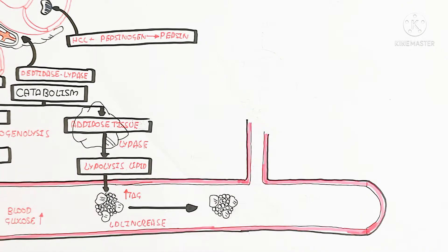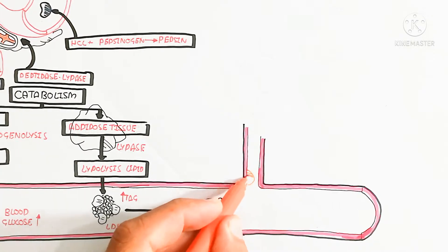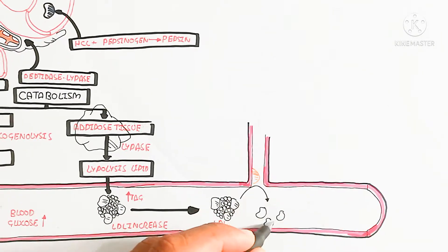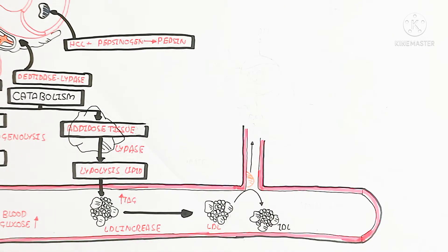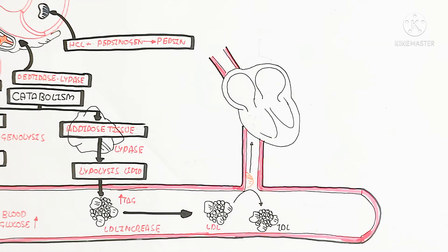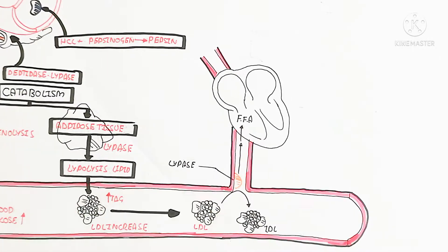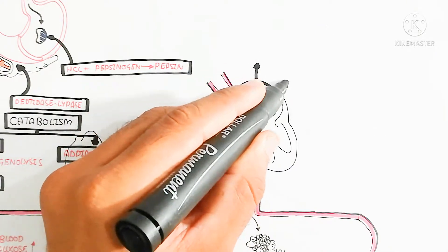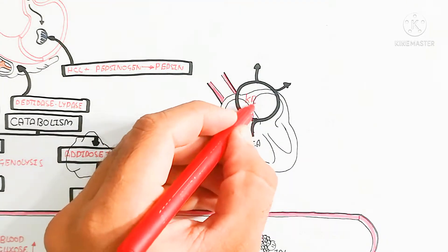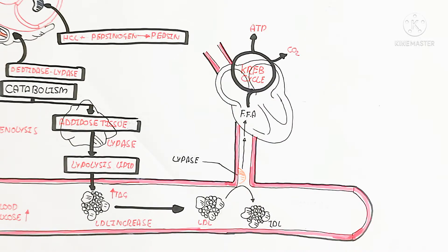Lipolysis releases free fatty acids and triacylglycerol, which are absorbed into lipoprotein globules containing cholesterol, apoprotein, and lipids. As a result, LDL — low density lipoprotein — is increased in the blood. Free fatty acids are required for heart contraction and are also used by the brain to produce energy in the form of ATP during the Krebs cycle.